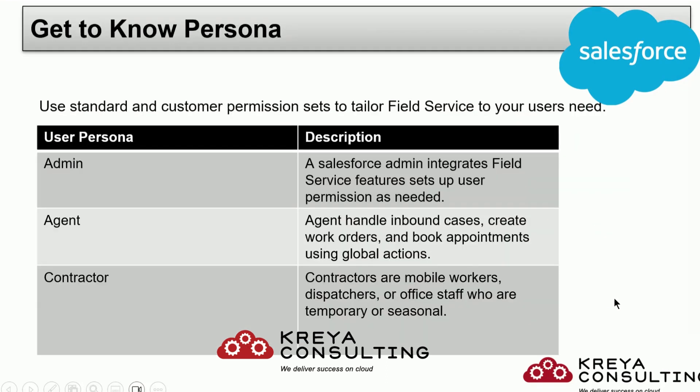Our next agenda is to get to know the persona. You are probably familiar with the 4 personas we learned in our previous session. Let's learn 2 more personas of Field Service that exist in the chain of Field Service. First is the contractor — a contractor is a temporary person who can be a mobile worker, dispatcher, or office staff for a short period of time.